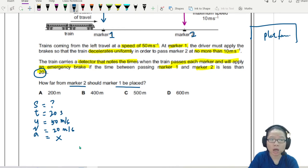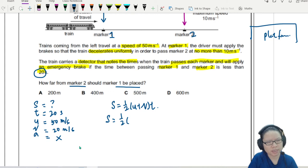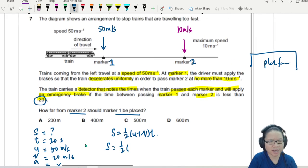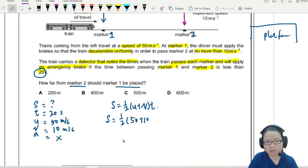Okay, now we can substitute. So I will use the equation without A: S equals half U plus V times T. So from here, I will have half... No, no, no, it's 10. 50 and 10. This is 10 meters per second. So 50 plus 10 multiplied by the time 20. So this will give me 600 meters.